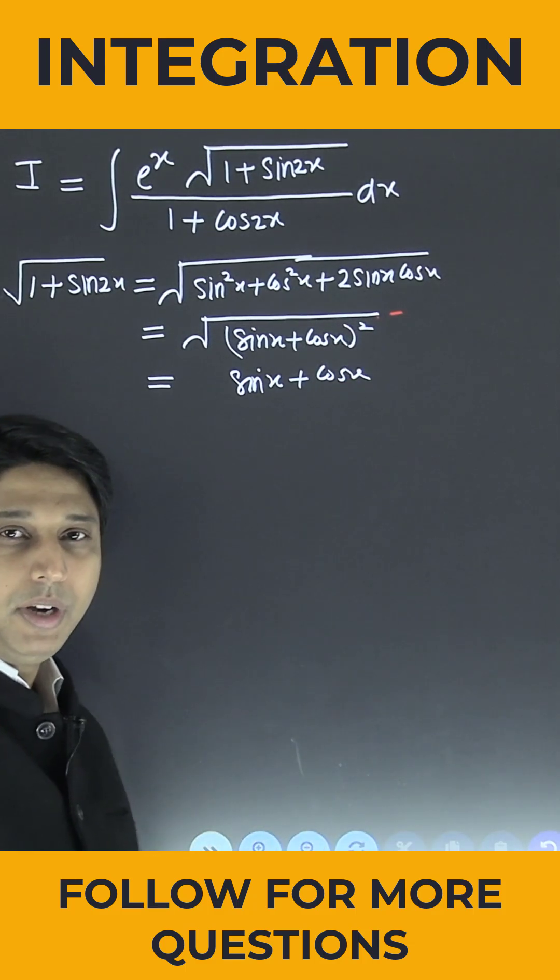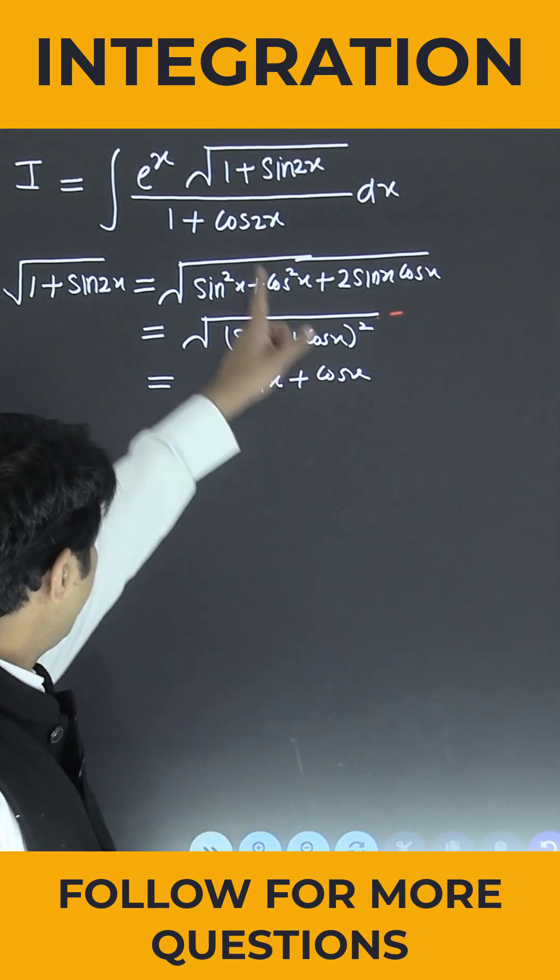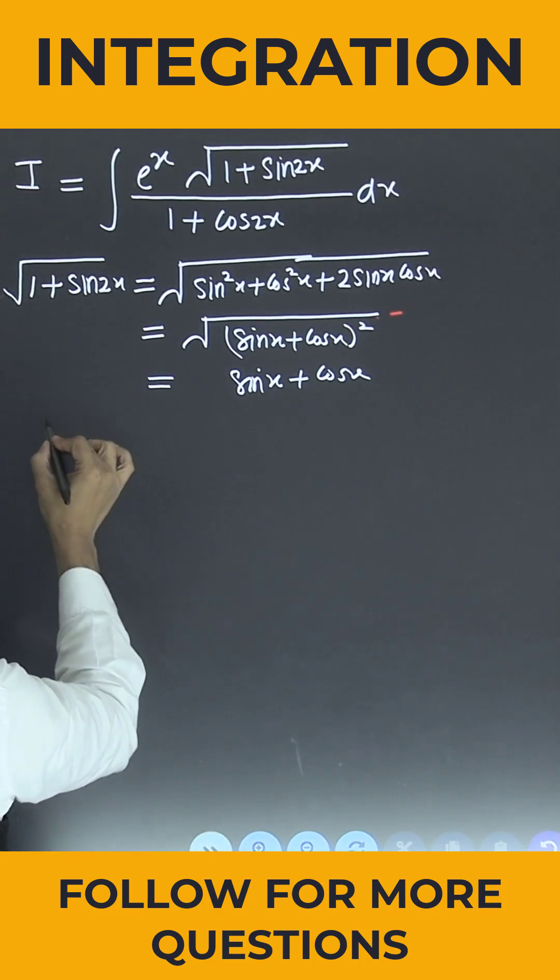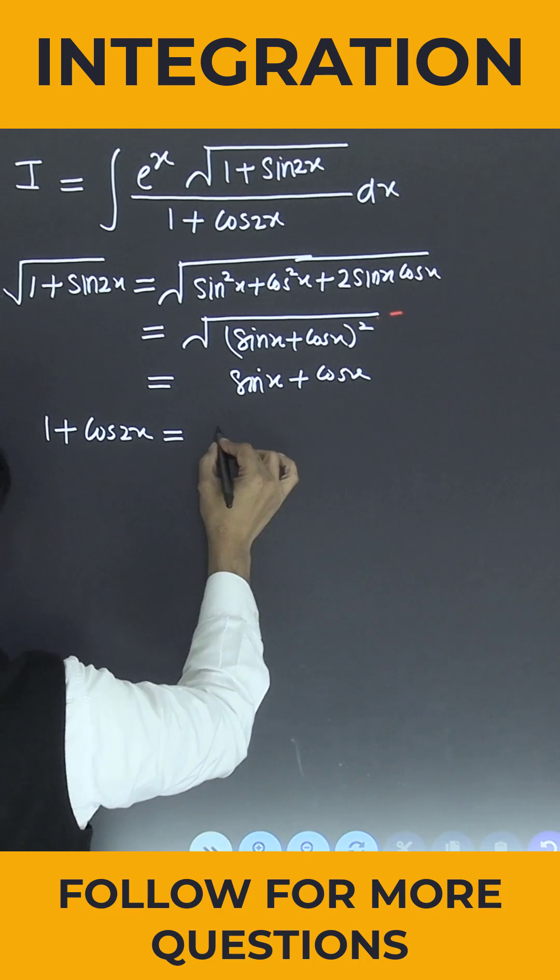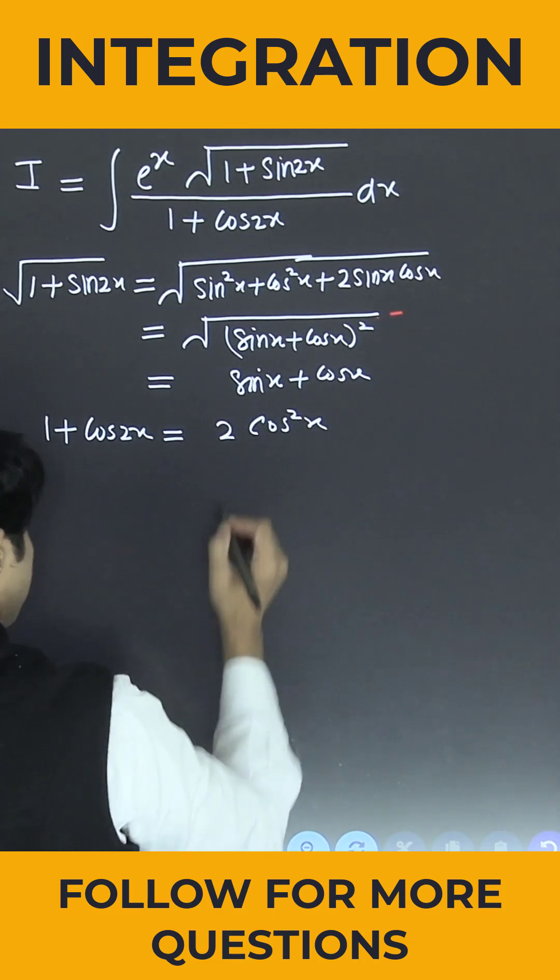Now similarly, let me do the rearrangement for the denominator. So we know very well 1 + cos 2x can be written as 2 cos²x.